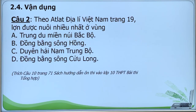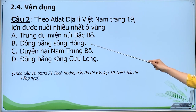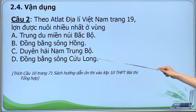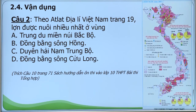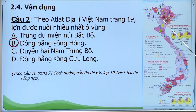Câu 2: Theo Atlas địa lý Việt Nam trang 19, lợn được nuôi nhiều nhất ở vùng: A. Trung Du miền núi Bắc Bộ; B. Đồng bằng sông Hồng; C. Duyên Hải Nam Trung Bộ; D. Đồng bằng sông Cửu Long. Quan sát vào Atlas trang 19, chúng ta dựa vào cột màu vàng thể hiện số lượng đàn lợn. Từ đó ta thấy đồng bằng sông Hồng là vùng có số lượng đàn lợn lớn nhất nước ta. Đáp án B.